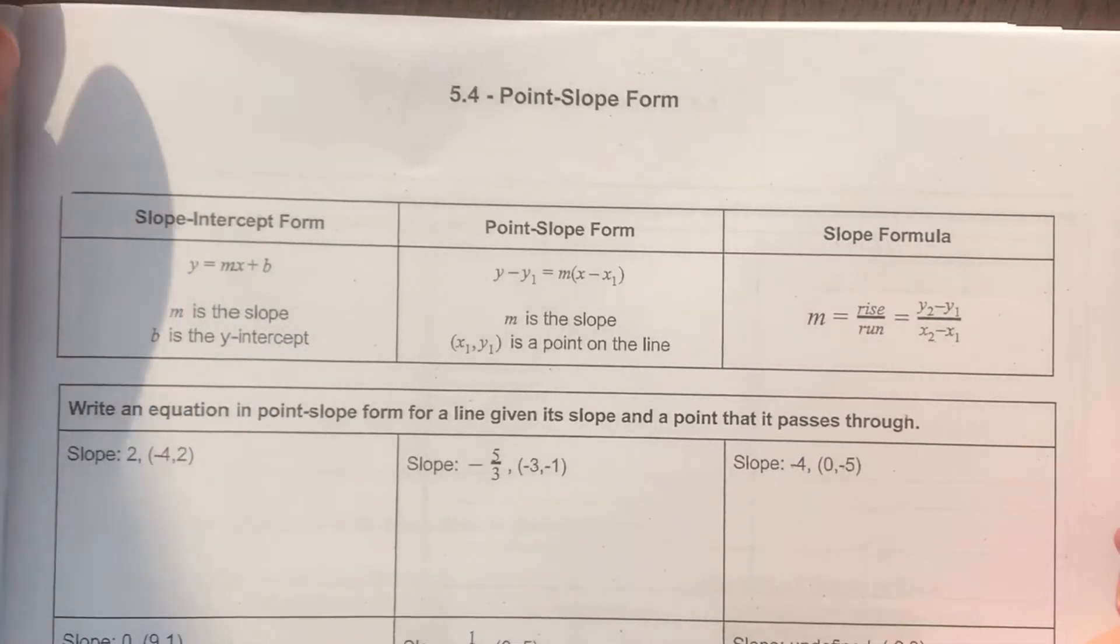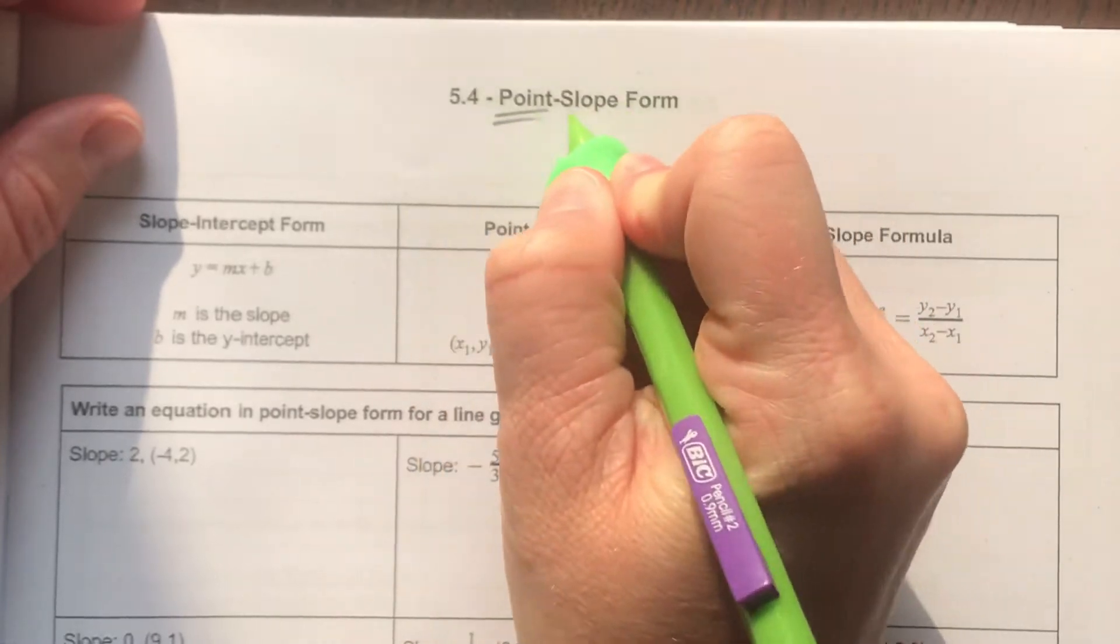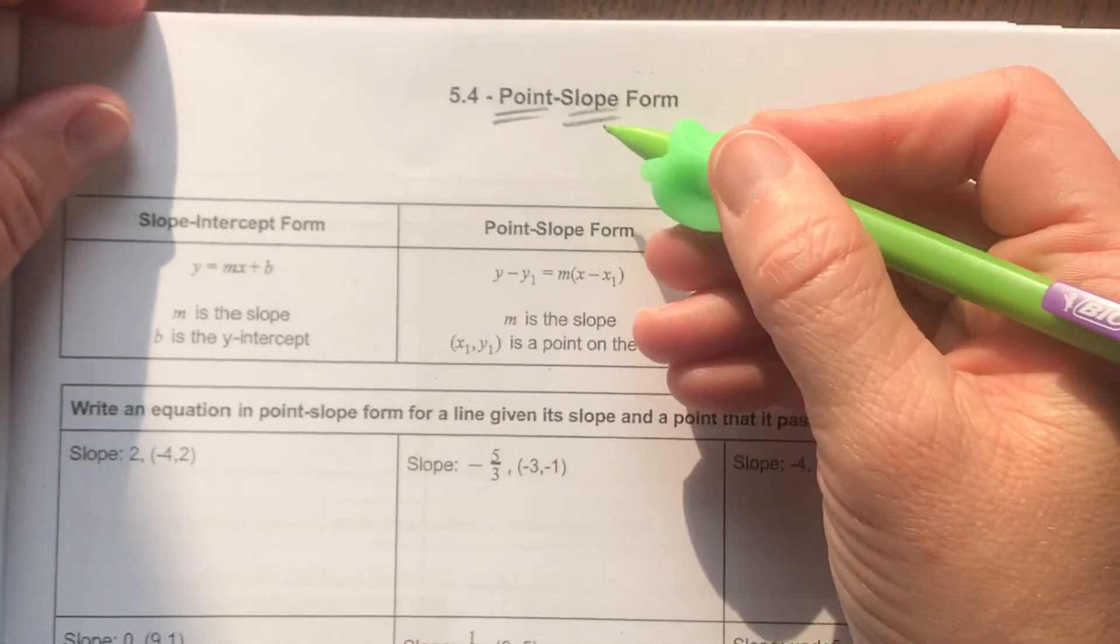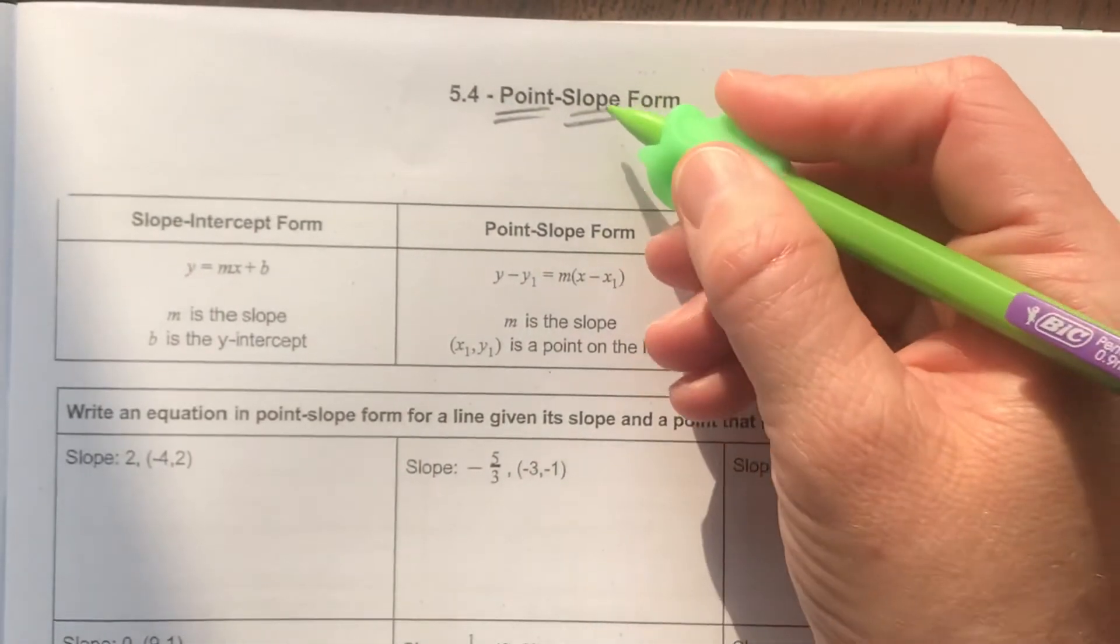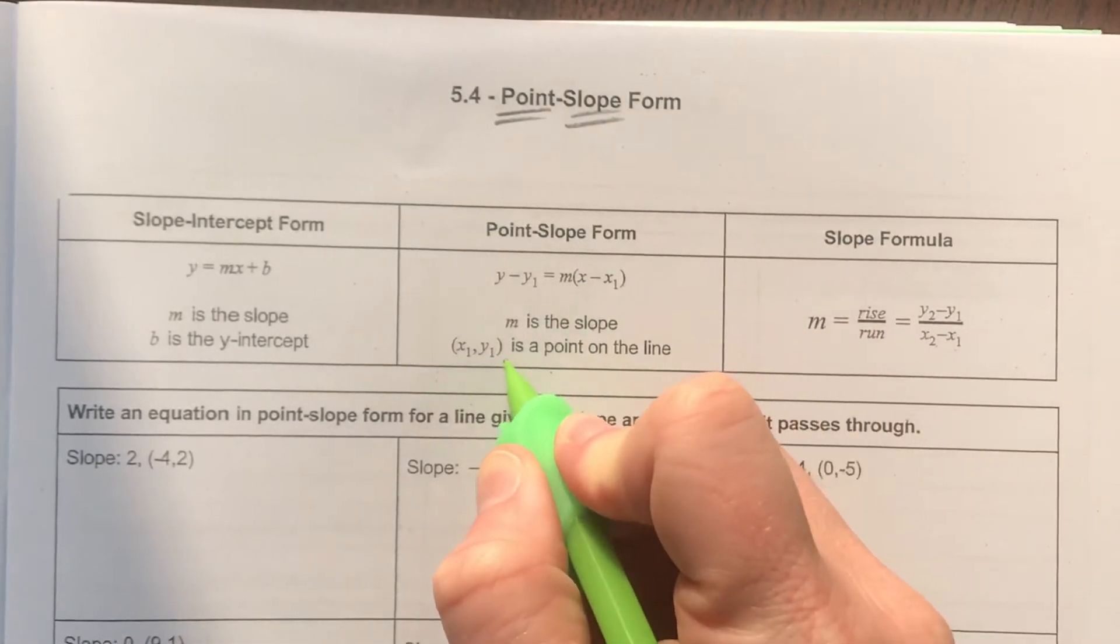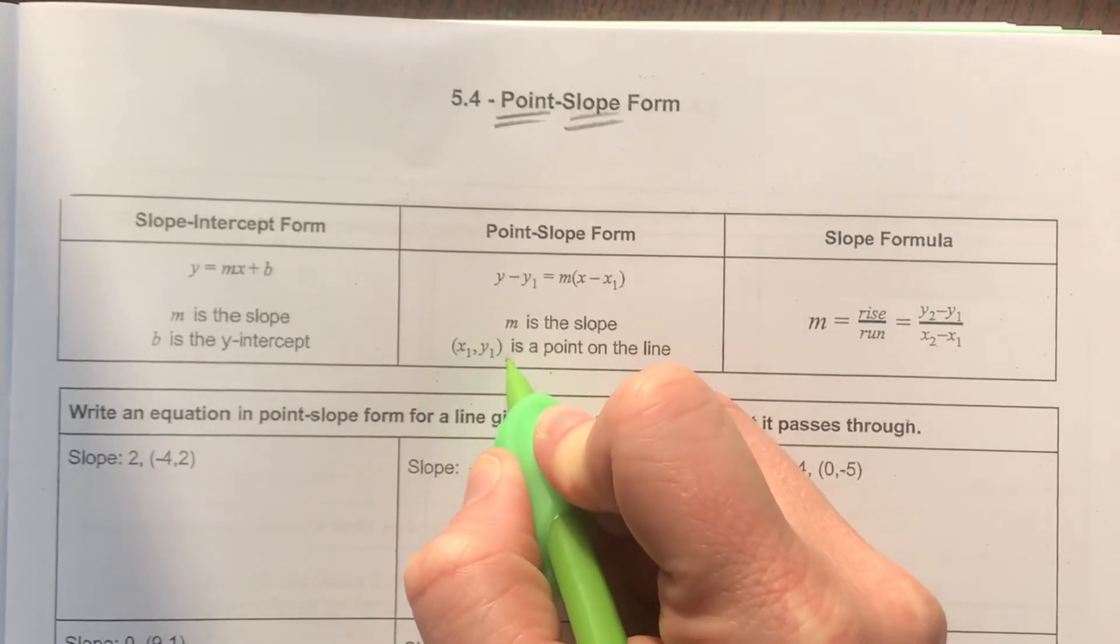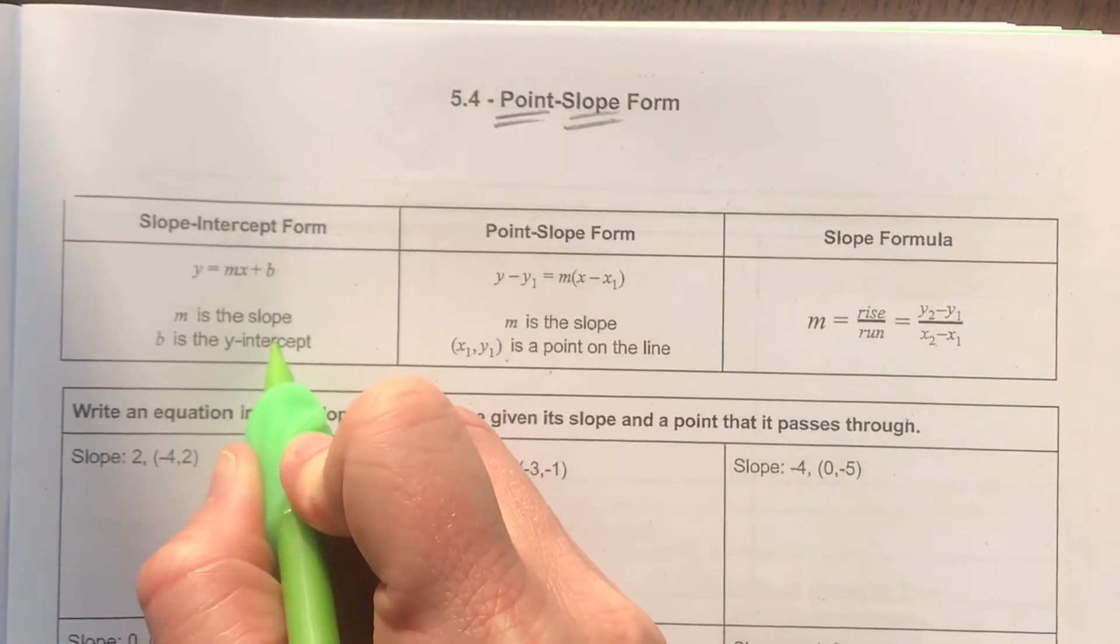In this video, I'm going to show you how to write equations of a line in point-slope form. Now, it's called point-slope form because in this formula, you know the slope of the equation and you know a point on the line, and most generally, it wouldn't be the y-intercept point, which would be the point in slope-intercept form.